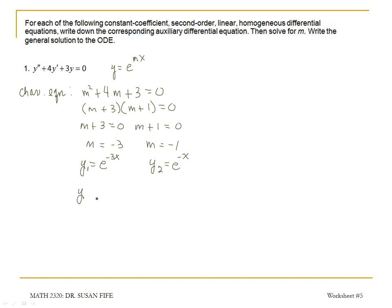And our general solution can be made up of those two solutions. The general solution can be written as c1 e to the negative 3x plus c2 e to the negative x, where c1 and c2 are any two constants. So this is our general solution.